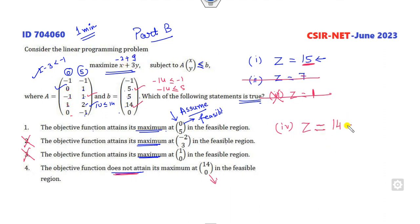What is the value of Z here? So 14 plus 0, that's 14. So what is that? It is canceled out.